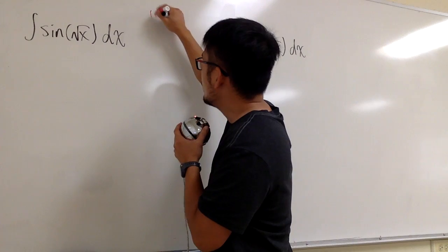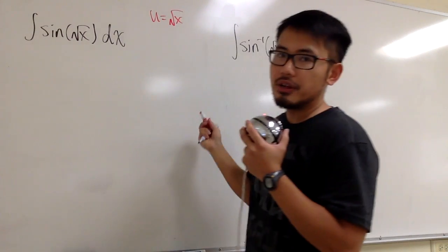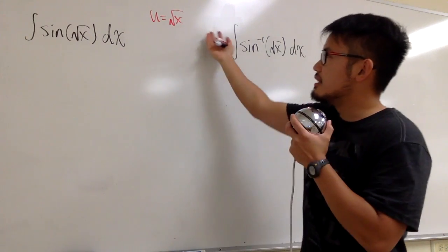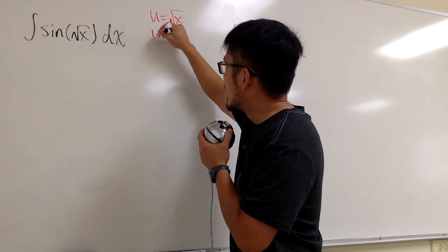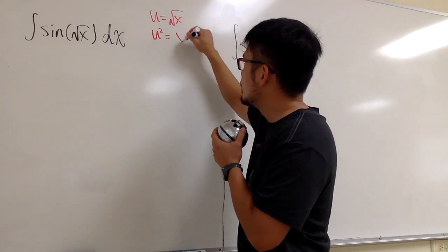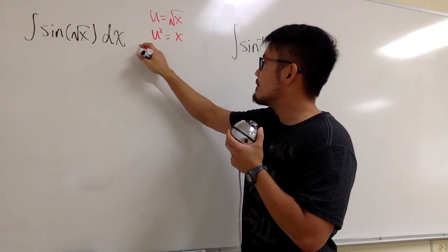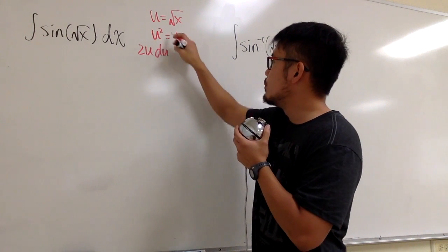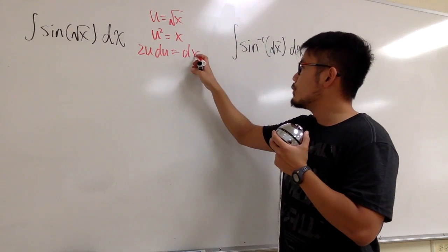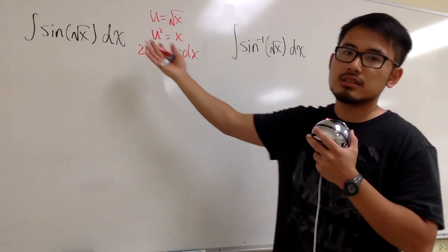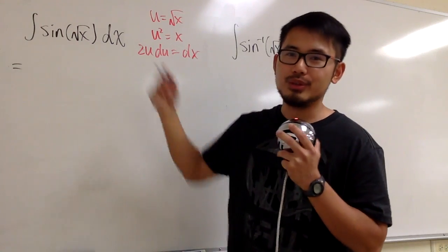I will let u equal to the square root of x, which is the inside function right here. Usually we can just take the derivative right here. However, let me square both sides, and we will have u squared is equal to x. Then I will take the derivative: we will have 2u du equals dx. When we do it this way, we get dx right away, and we are ready to take this integral into the u world.